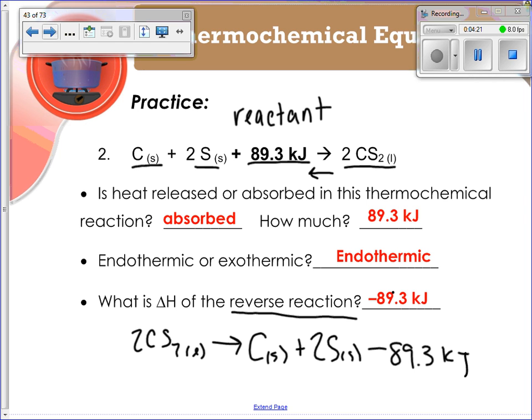If you change the direction of your equation, the sign of your change in H is going to change. Because remember, if we're going in that first direction up here at the top, that is endothermic. If we go backwards, it becomes an exothermic reaction. So you'd really be, let me correct this, you'd really have it added there as a product. But if you were writing it separately as a change in H, it would have the negative, just to clarify.